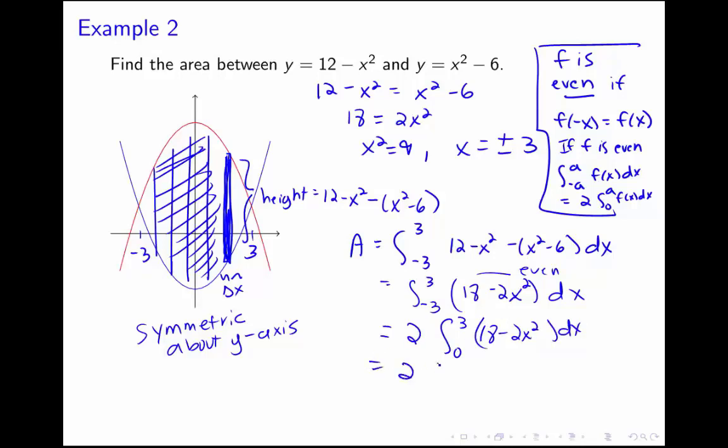And then I have 2 times my antiderivative here, 18x minus 2x cubed over 3, evaluated from 0 to 3. So we'll have 2 times 18 times 3 minus 2 thirds times 27—that's what 3 cubed would be—minus 0. When we simplify that, we get that our area is equal to 72.